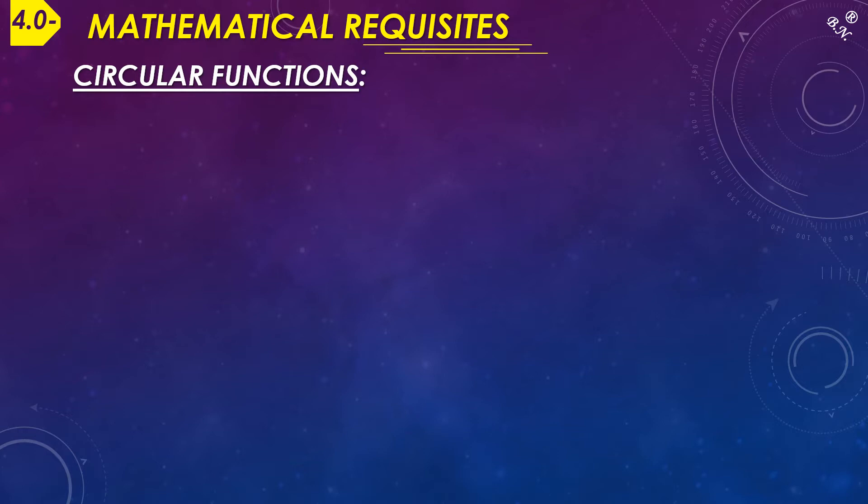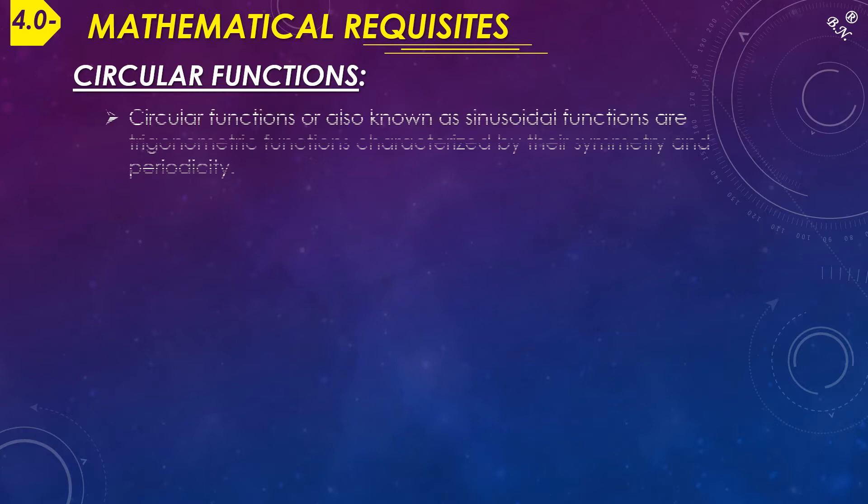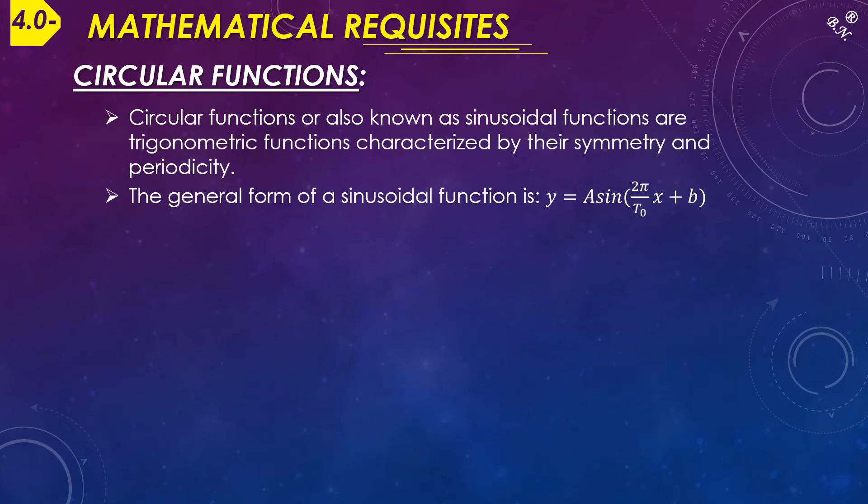Starting with circular functions, or what's known as trigonometric functions, they are simply sinusoidal functions that are characterized by their symmetry and periodicity. The general form of any sinusoidal function is y = A sin(2π/T₀ x + b). Notice that we're dealing with this as a mathematical approach, so the variables are x and y, where x is our primary variable and y is our dependent variable.